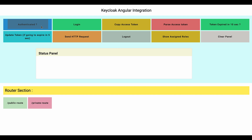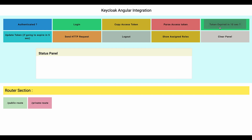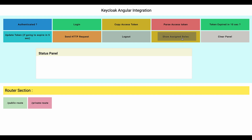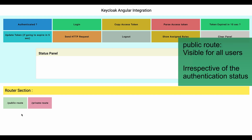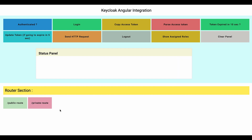The 'Is Authenticated' button checks whether the user is authenticated. The 'Login' button initiates the login process. 'Copy Access Token' copies the access token to the clipboard. 'Parse Access Token' shows the parsed access token — since an access token is in Base64 encoded format, this parses it into a JSON object. We can check whether the token is going to expire within the next 10 seconds, refresh the token if it will expire within 5 seconds, send a mock HTTP request with the access token as a bearer token, logout, show assigned roles, and clear the status panel.